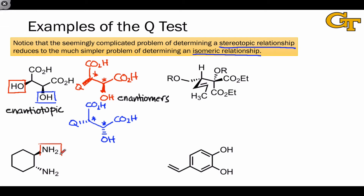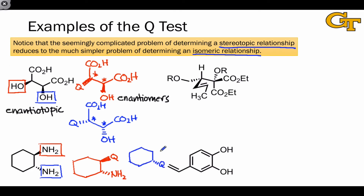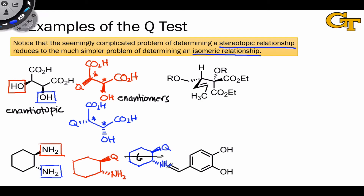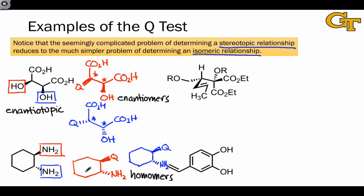In this example, we're interested in the relationship between the two amino groups, boxed once again in red and blue. Replacement of the red amino group with an achiral test group Q leads to the molecule shown here. And replacement of the blue amino group leads to the molecule shown here. Once again, these molecules have the same connectivity. If I try to superimpose them perfectly by rotating this molecule 180 degrees around an axis, Q moves into an outward pointing position exactly where the amino group is located, while the amino group moves into a position down here, indicating that these two molecules are in fact one and the same structure — they're homomeric. As a consequence, the two amino groups in the original structure are homotopic.